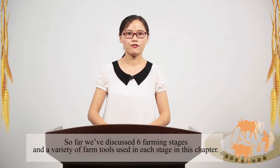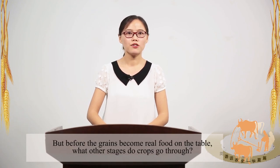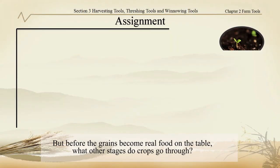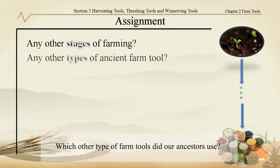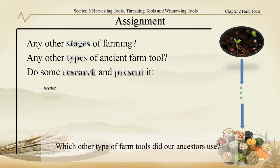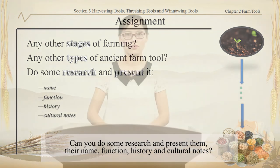So far, we've discussed six farming stages and a variety of farm tools used in each stage in this chapter. But before the grains become real food on the table, what other stages do crops go through? Which other types of farm tools did our ancestors use? Can you do some research and present them — their name, function, history, and cultural notes?